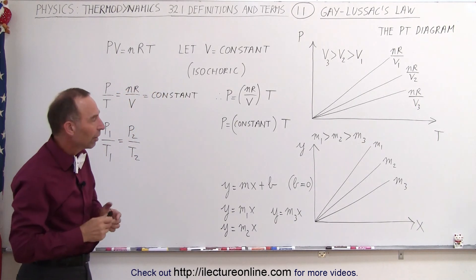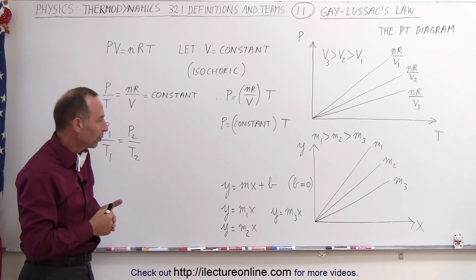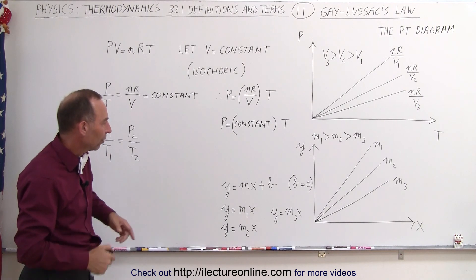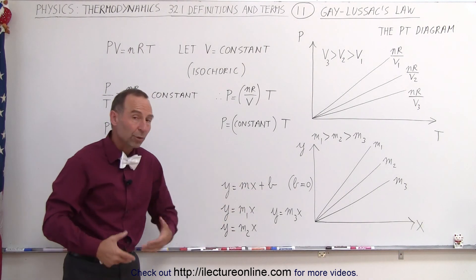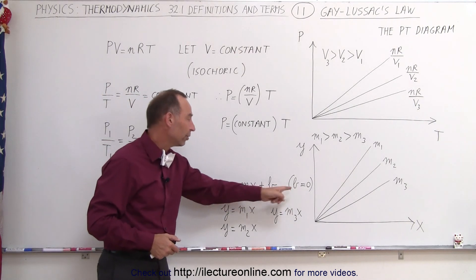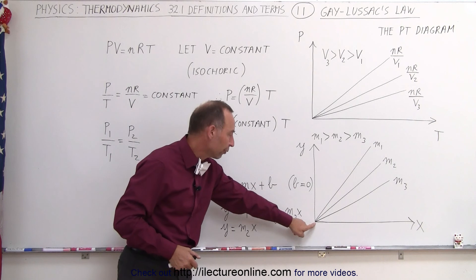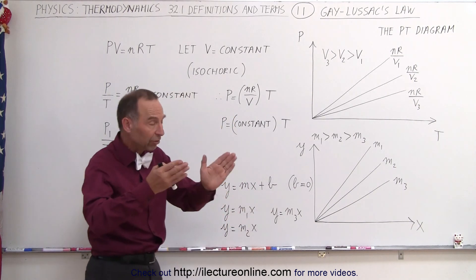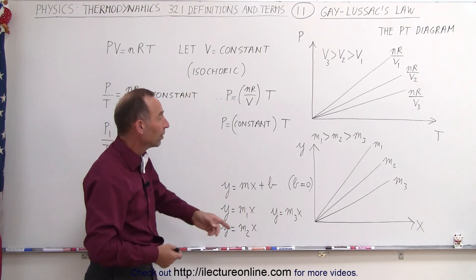Now that should remind us of something we've seen before in algebra. On the xy-axis, we have the equation y equals mx plus b, which represents a linear equation. If we now set b equal to 0, all the lines would converge to the origin right here.